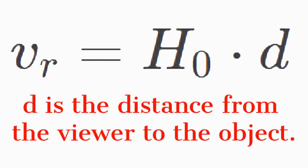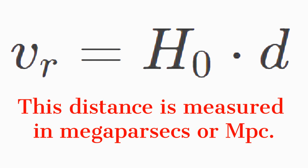D is the distance of the object from the viewer and is often measured in megaparsecs or MPC.